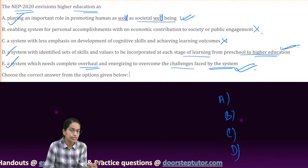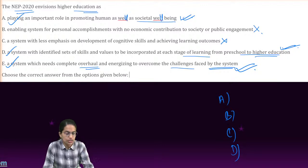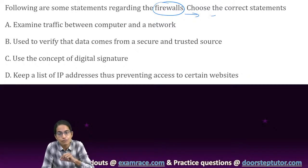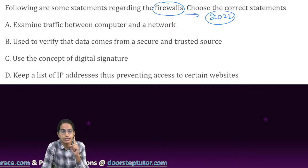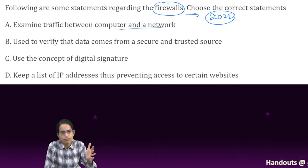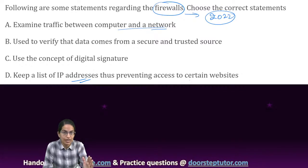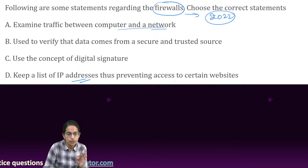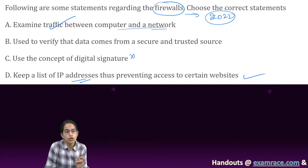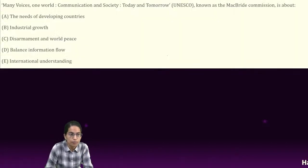This is a multiple-correct-option question on higher education, meaning you must be familiar with each option and have in-depth understanding before solving. There was also a question on firewall - this was repeated from 2021 in 2022, making it an exceptionally important topic. The role of a firewall is to manage traffic between the network and your computer system, and it keeps a list of IP addresses to prevent certain websites from being accessed. A and D are the right options.